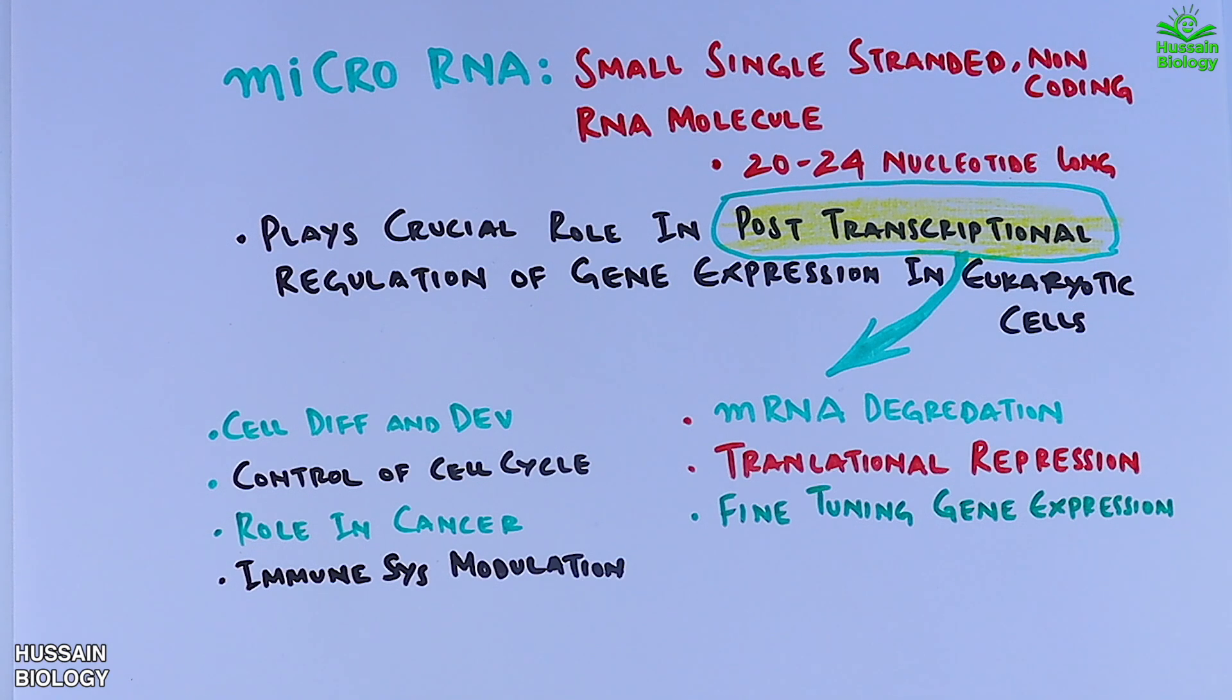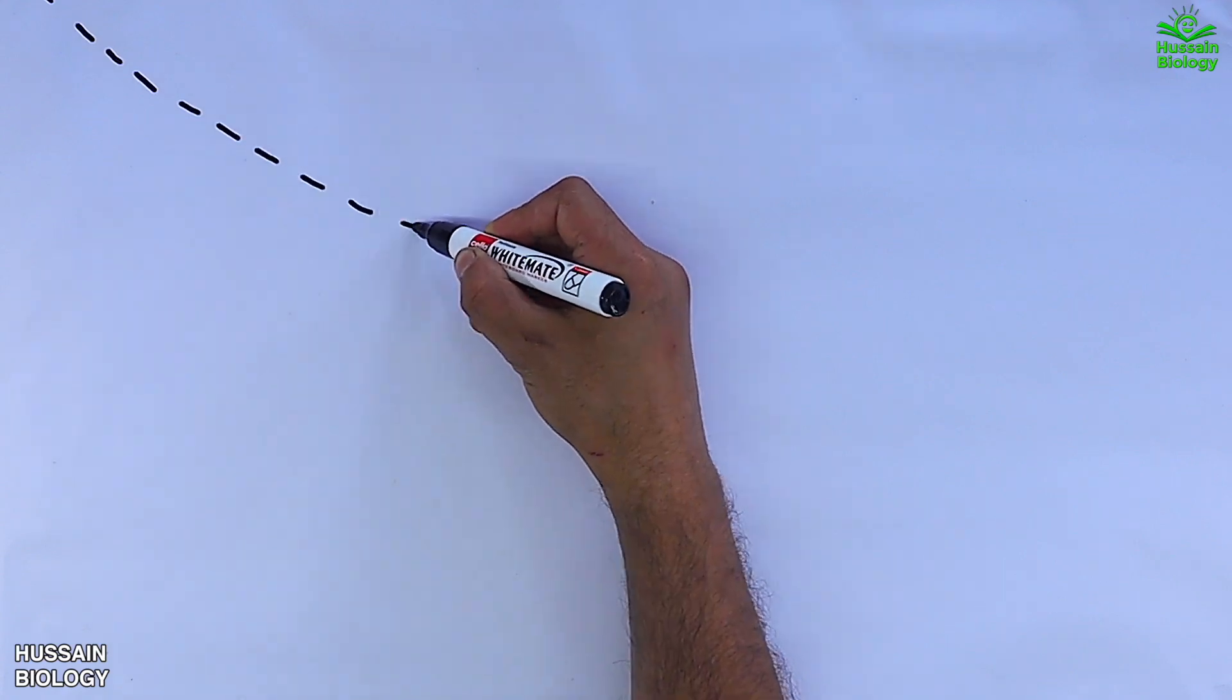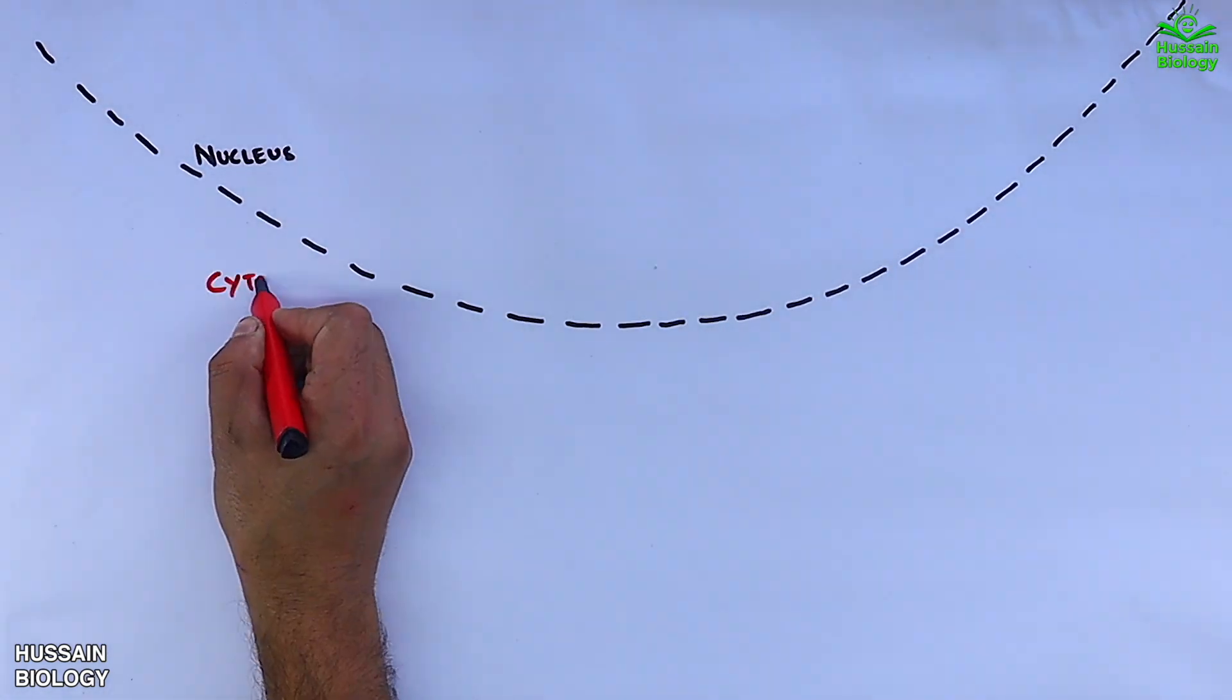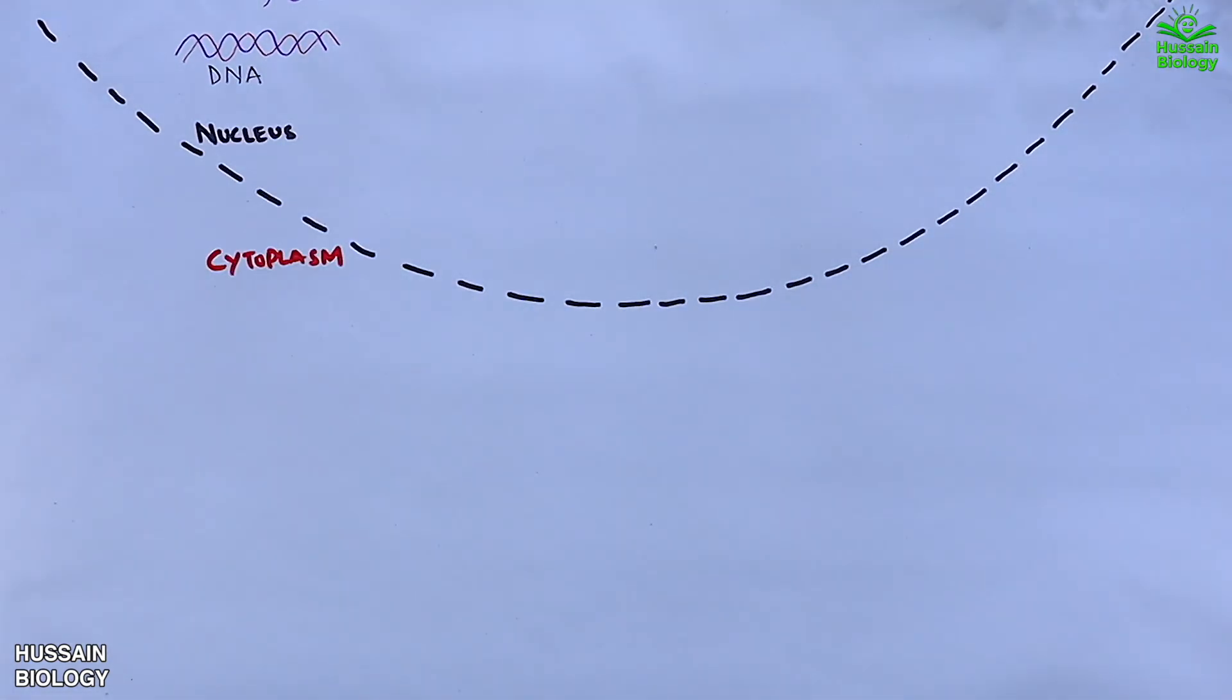Now let's get into the detailed mechanism of miRNA processing. Here in this diagram we have the nucleus and the cytoplasm of the cell. Within the nucleus we have DNA. This DNA is acted upon by the enzyme RNA polymerase 2, and we get the primary microRNAs.